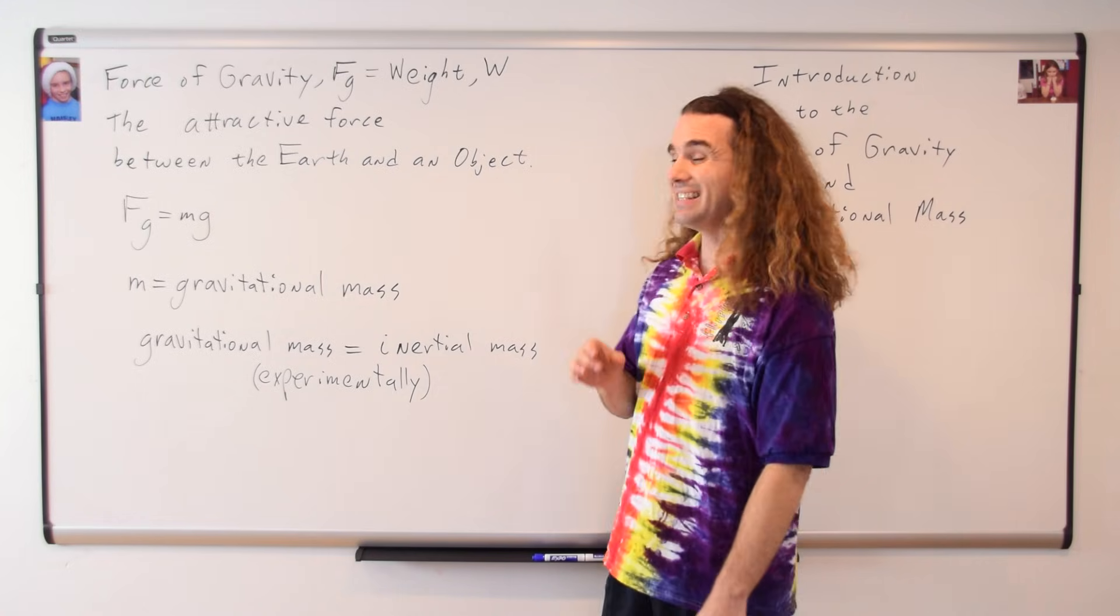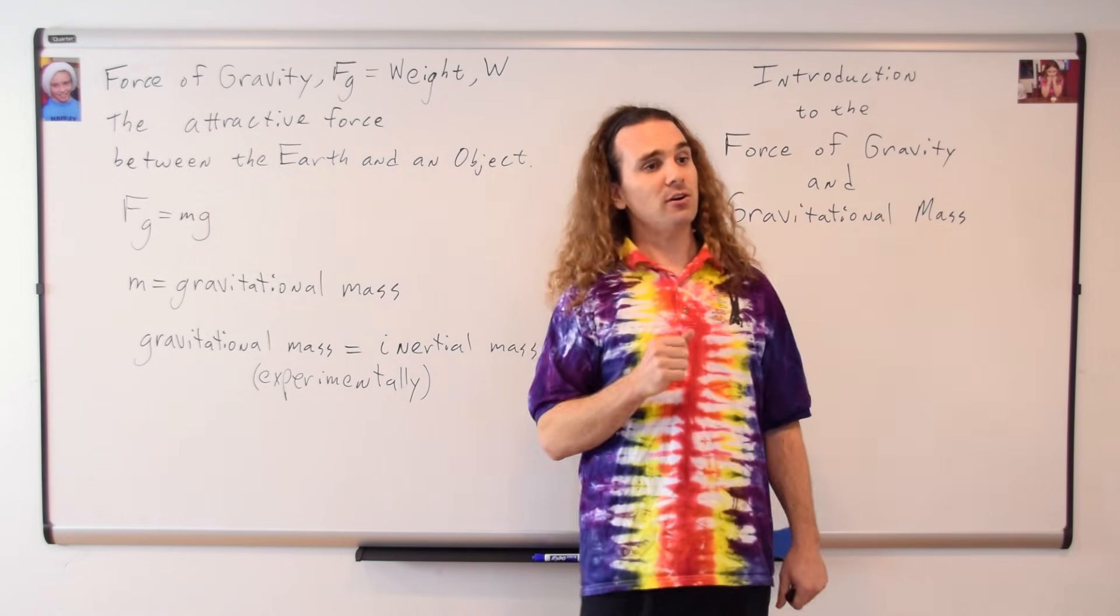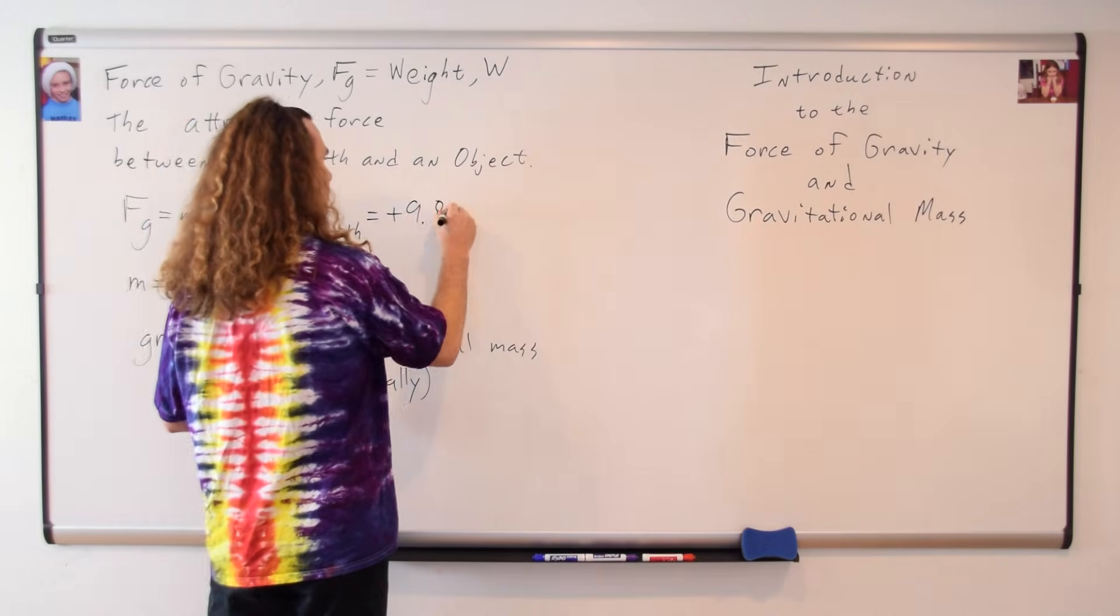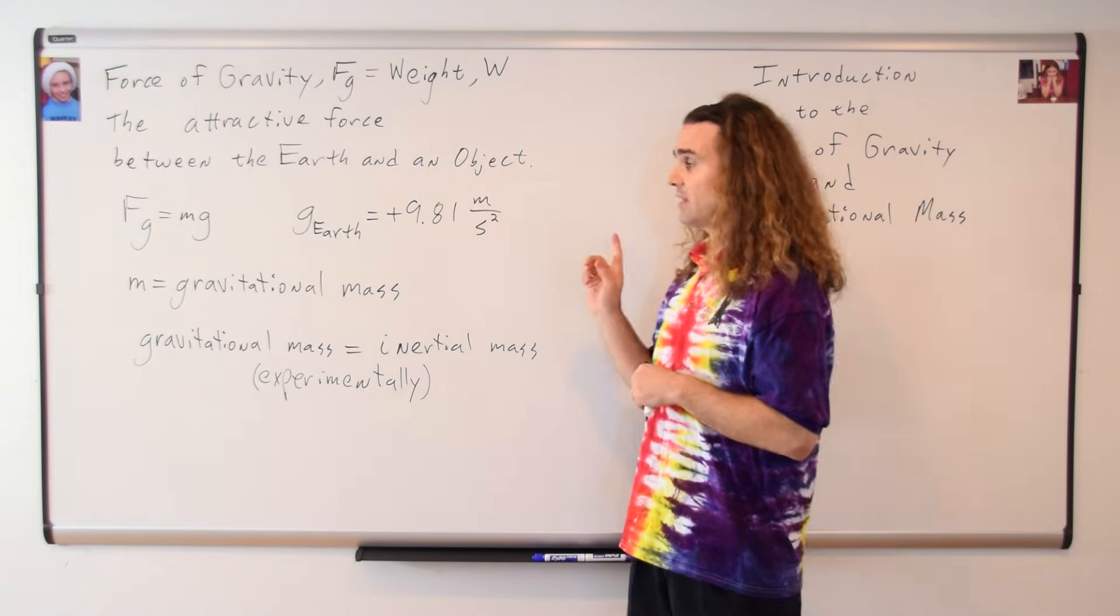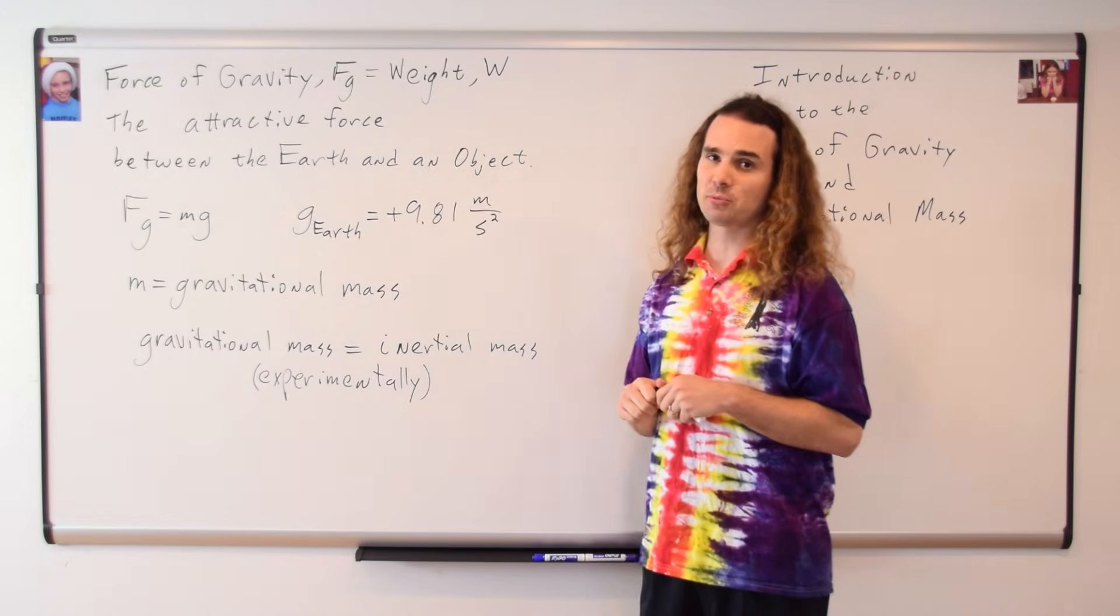Billy, remind me, what is the accepted value for the acceleration due to gravity here on planet Earth? 9.81 meters per second squared. Positive or negative? Positive. Are you positive? Absolutely. Good. The accepted value for the acceleration due to gravity here on planet Earth is positive 9.81 meters per second squared.